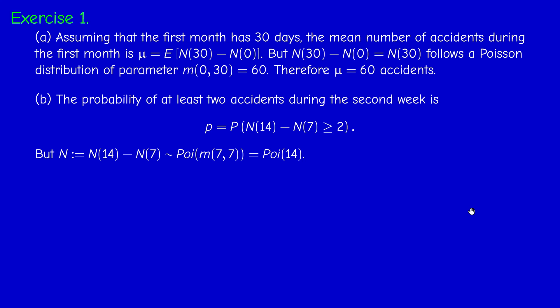For the second question, the number of accidents during the second week is N(14) minus N(7). We compute the probability that this random variable N is at least 2. This random variable follows a Poisson distribution with parameter M(7,7) = 2×7 = 14, since here S equals 7 and T equals 7.